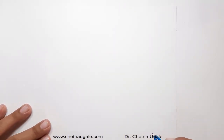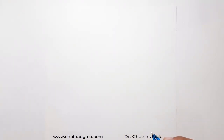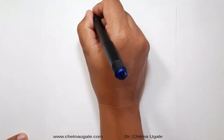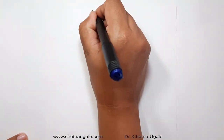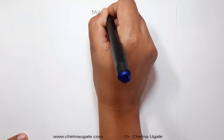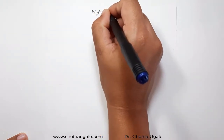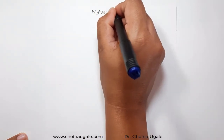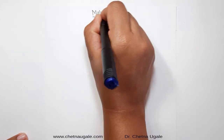Today we are going to learn about the Malvesi family. The Malvesi family is also known as the cotton family. Let's see the morphology of the Malvesi family.